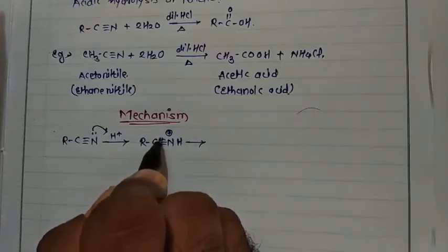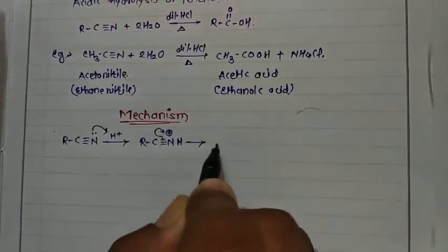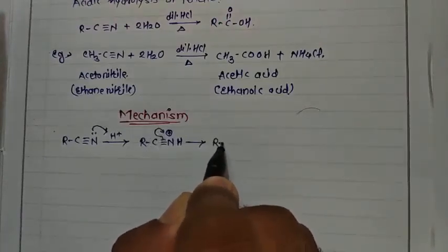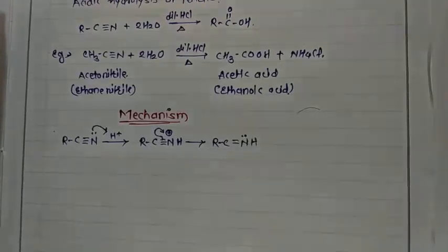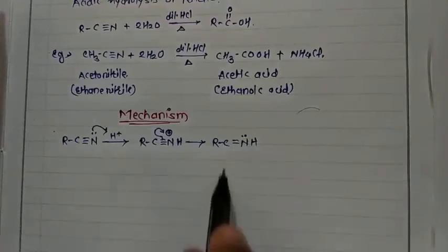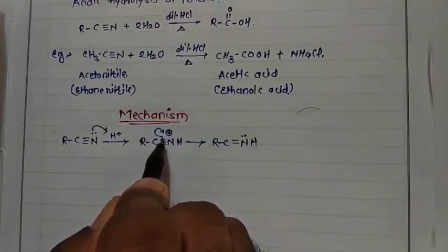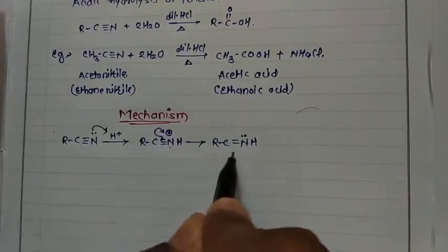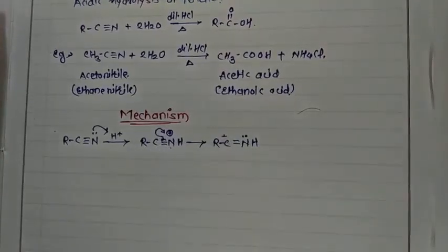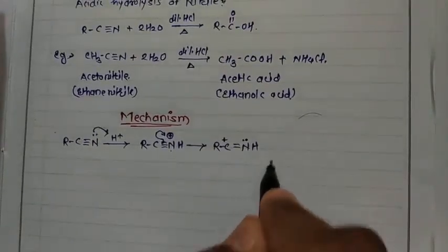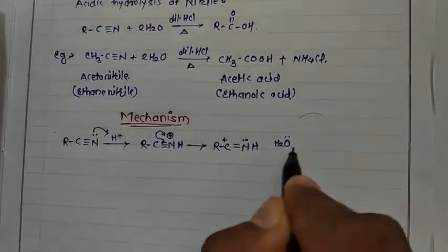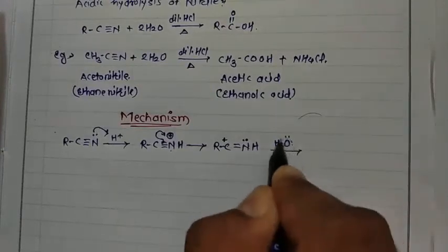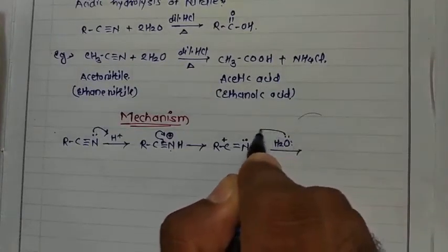When the pi bond breaks, the electron pair shifts from nitrogen to carbon, making carbon positively charged. Since carbon is positively charged, it is attacked by a water molecule — the oxygen lone pair of the water molecule attacks the carbon.